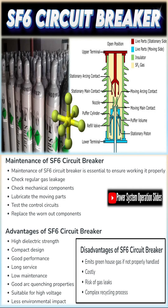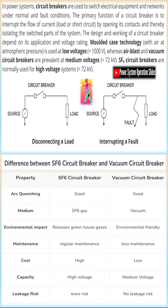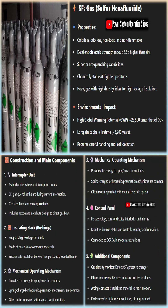In power systems, circuit breakers are used to switch electrical equipment and networks under normal and fault conditions. The primary function of a circuit breaker is to interrupt the flow of current — load or short circuit — by opening its contacts and thereby isolating the switched parts of the system. The design and working of a circuit breaker depend on its application and voltage rating.